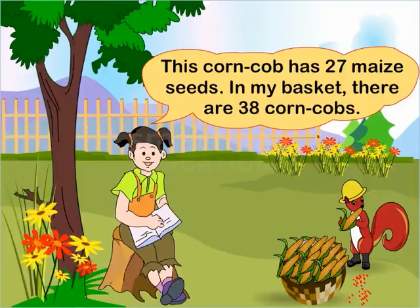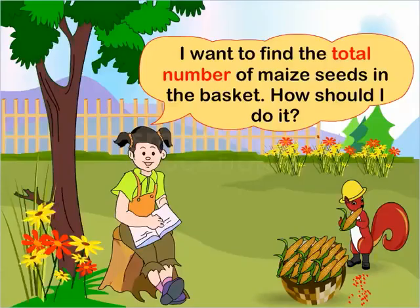This corncob has 27 maize seeds. In my basket, there are 38 corncobs. I want to find the total number of maize seeds in the basket. How should I do it?